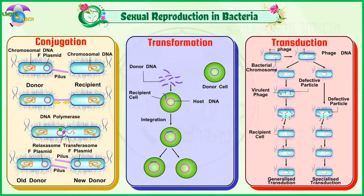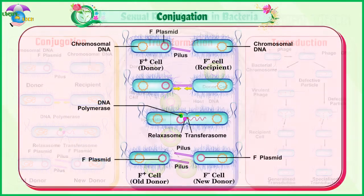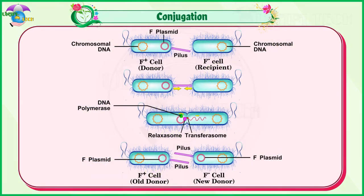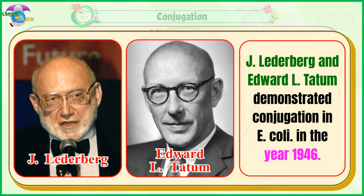The three methods are conjugation, transformation, and transduction. One: Conjugation. J. Lederberg and Edward L. Tatum demonstrated conjugation in E. coli in the year 1946.